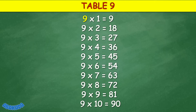Table 9: 9 times 1 equals 9, 9 times 2 equals 18, 9 times 3 equals 27, 9 times 4 equals 36, 9 times 5 equals 45, 9 times 6 equals 54, 9 times 7 equals 63, 9 times 8 equals 72, 9 times 9 equals 81, 9 times 10 equals 90.